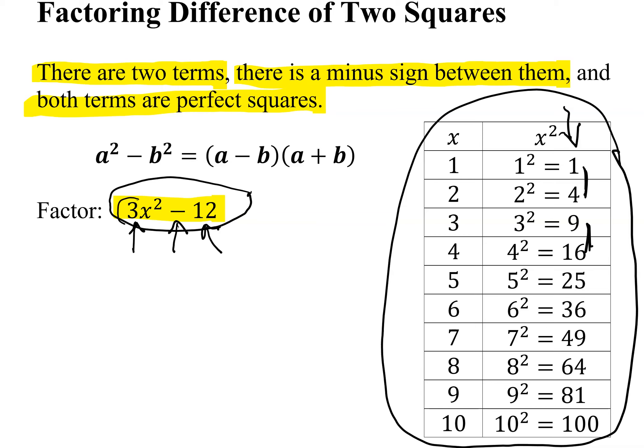Well if you look, we have a 3 and a 12. They're both divisible by 3. So the first thing we have to do in factoring this problem is factor a 3 out. And once I've factored the 3 out, I get left with x squared minus 4, since 3 goes into 12 four times.